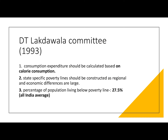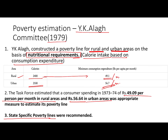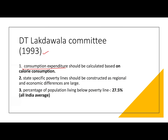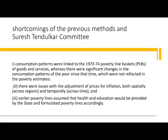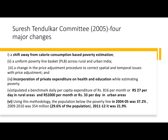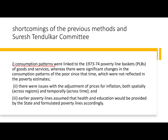After the YK Alagh Committee, the DT Lakdawala Committee was formed in 1993. It recommended continuing the consumption expenditure criteria from the YK Alagh Committee, and state-specific poverty lines were also continued. Based on this calculation, the percentage of population living below the poverty line came to 27.5%, which was the all-India average. Between 1993 and 2005, the consumption pattern changed and inflation figures shifted, so the criteria of poverty line had to be reconsidered.